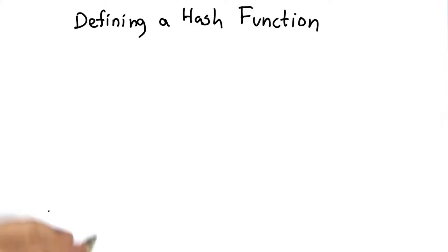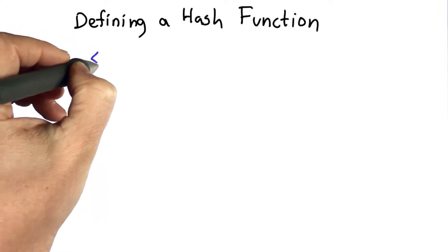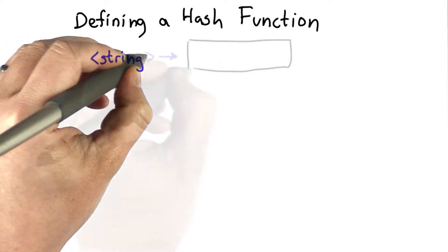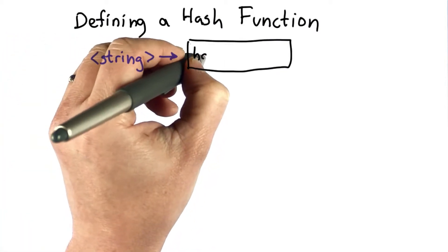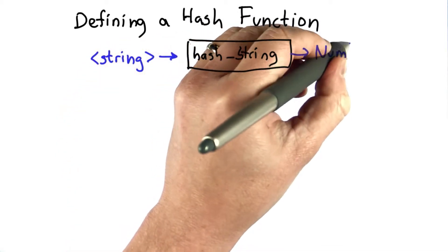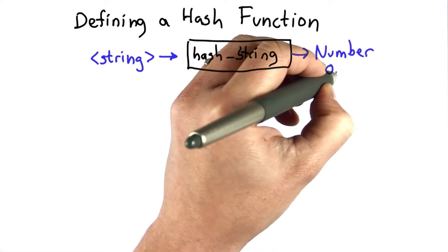So let's try to define a hash function that has these properties, and what we want the hash function to do is to take a string as its input. We'll call the hash function hash_string, and it will produce as output a number between 0 and b.